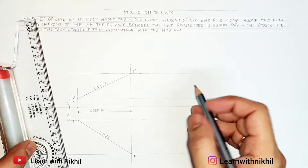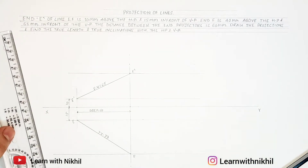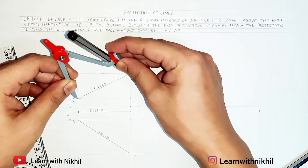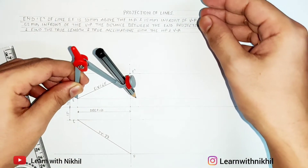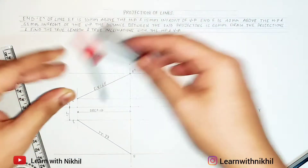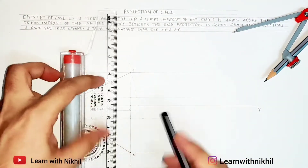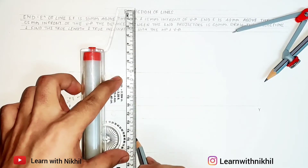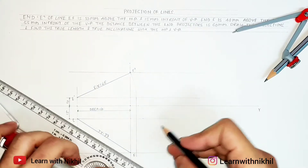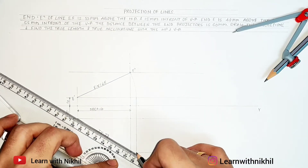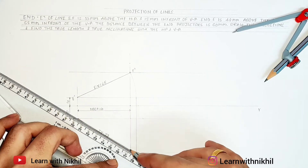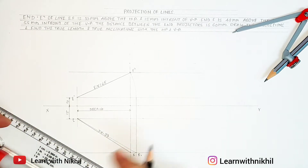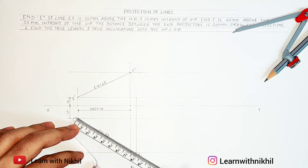Now we are done with the front view and the top view. To draw the true length, we will draw a curve taking the distance from E dash to F dash on the compass, drawing the curve and intersecting till this line. Through that intersection we will draw a parallel line below, touching the locus of F. The intersection point from that to this point will be the true length of the line. We will mark this point as F1. The true length is 80 mm.